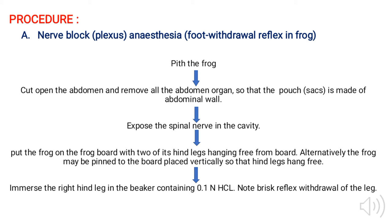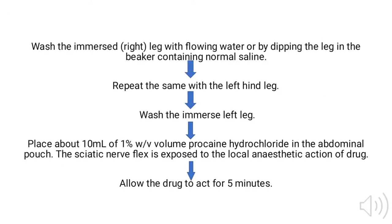Now in the abdominal cavity the spinal region is exposed with the help of surgical instruments. Put the frog on the frog board with two of its hind legs hanging free from the board. Alternatively, the frog may be pinned to the board placed vertically so that hind legs hang free. Then immerse the right hind leg in a beaker containing 0.1 normal hydrochloric acid and note the brisk reflex withdrawal of the leg. Wash the immersed right leg with flowing water or by dipping the leg into a beaker containing normal saline. Repeat this procedure for the left hind leg and wash the immersed left leg.